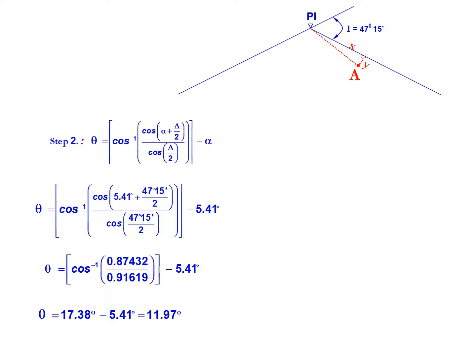Our final simplification will end up with theta equal to 17.38 degrees minus 5.41 degrees for a final theta of 11.97 degrees.